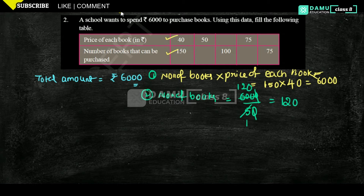So number of books will be 120 — we can buy 120 books here. Next, for the third one, they are given the number of books that can be purchased; find the price of each one.